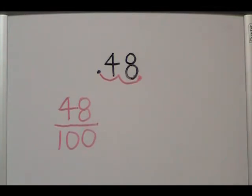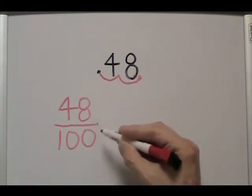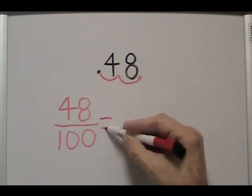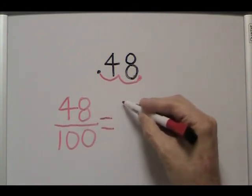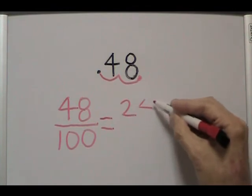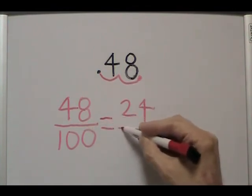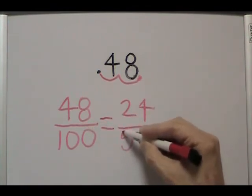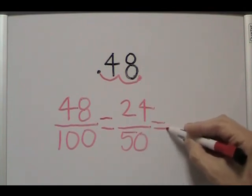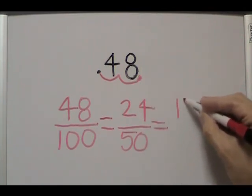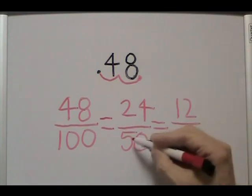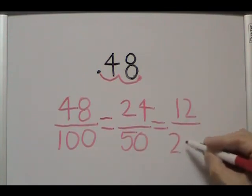Now, instead of trying to find the GCF or greatest common factor to do this, we'll use the chopping method because both the numerator and denominator are even. So half of 48 gives us 24. Half of 100 gives us 50. Half of 24 gives us 12. Half of 50 gives us 25.